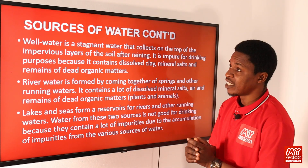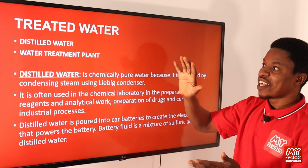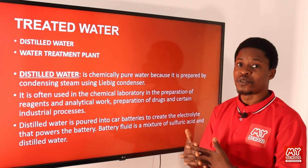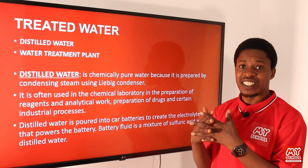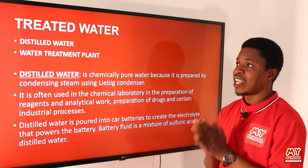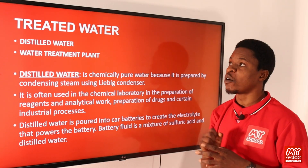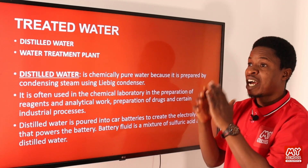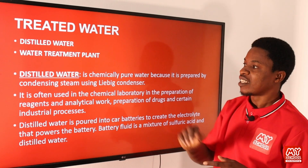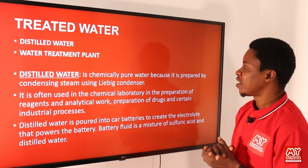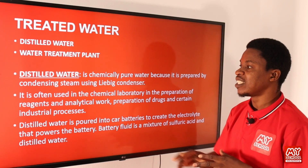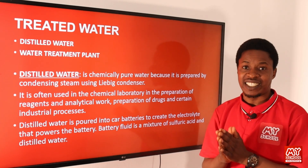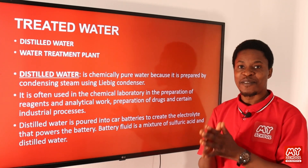All the water sources we've discussed need to be treated before they can be used — either for human consumption or for carrying out analytical processes in a laboratory. We have two types of treated water: distilled water, and water processed in treatment plants for township or human consumption. Distilled water is chemically pure water prepared by condensing steam using the Liebig condenser.